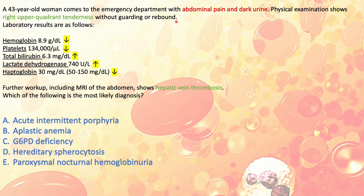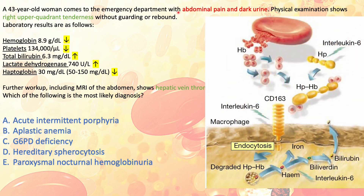Haptoglobin is a protein that protects your body from the free radical effect of iron. Any free hemoglobin released into the circulation binds to haptoglobin right away and is promptly phagocytosed to prevent oxidative stress. When haptoglobin is low, it means it has been consumed by the ongoing intravascular hemolytic process.